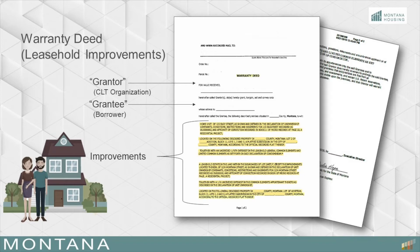A recorded warranty deed of leasehold improvements is from the community land trust to the qualified buyer. This will be the vesting deed for the improvements granted by the CLT. It should show the name of the CLT as the grantor of the deed, the borrower as the grantee, and contain the real property legal description where the improvements are located.